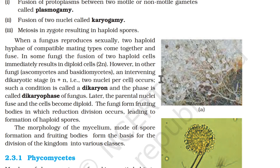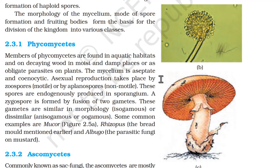The morphology of the mycelium, mode of spore formation, and fruiting bodies form the basis of division of the kingdom into various classes. 2.3.1 Phycomycetes. Members of phycomycetes are found in aquatic habitats, on decaying wood in moist and damp places, or as obligate parasites on plants. The mycelium is aseptate and coenocytic. Asexual reproduction takes place by zoospores which are motile, or by aplanospores which are non-motile. These spores are endogenously produced in sporangia. A zygospore is formed by fusion of two gametes — isogametes or anisogametes. Some common examples are Mucor, Rhizopus (the bread mold), and Albugo (the parasitic fungi on mustard).